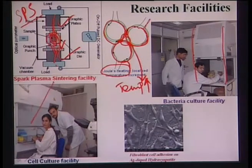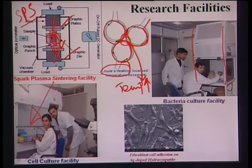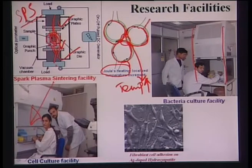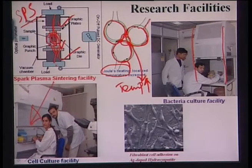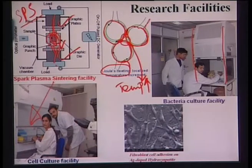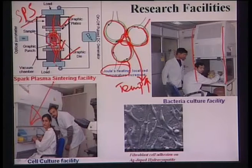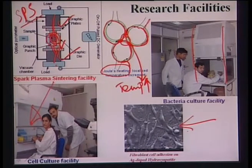This is the cell culture facility, which includes microscopes like phase contrast microscopes or fluorescent microscopes, as well as a laminar flow hood used as a wet bench. We also have a CO2 incubator for incubating the cells. This is an SEM image typically showing how cells proliferate on silver-doped hydroxyapatite.